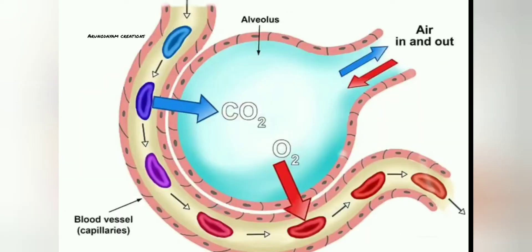Each alveolus is covered with a membrane which has a single layer of cells — that means each alveolus is made up of a one-cell-thickness membrane. Each alveolus is surrounded by blood capillaries, and these blood capillaries are also covered with membranes of one-cell thickness, meaning they also have single-layered membranes.